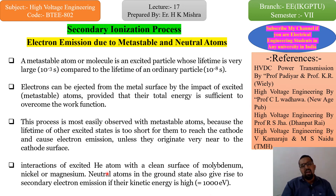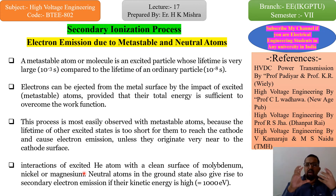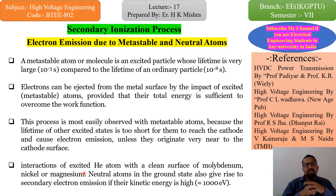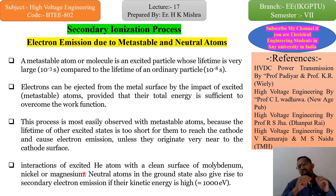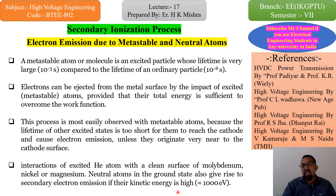The interaction of excited helium atoms with a clean surface of molybdenum, nickel, or magnesium electrodes shows that neutral atoms in the ground state also give rise to secondary emission — emitting secondary electrons after the first electron emission during the first ionization process — provided their kinetic energy is high, specifically greater than or equal to 1000 electron volts.